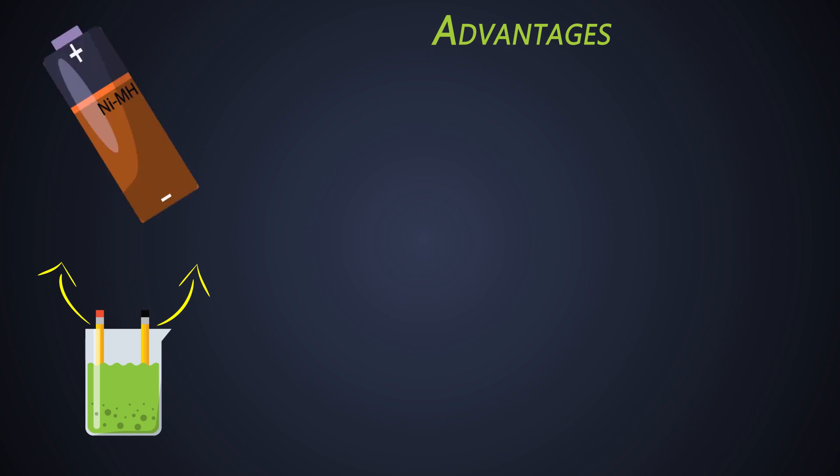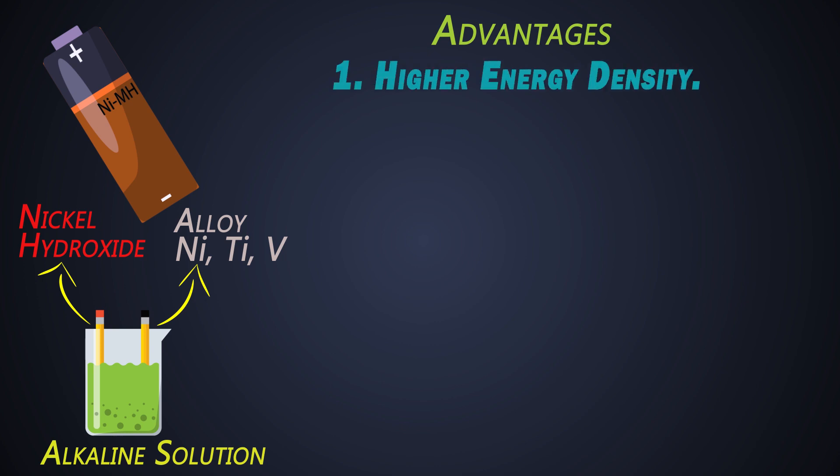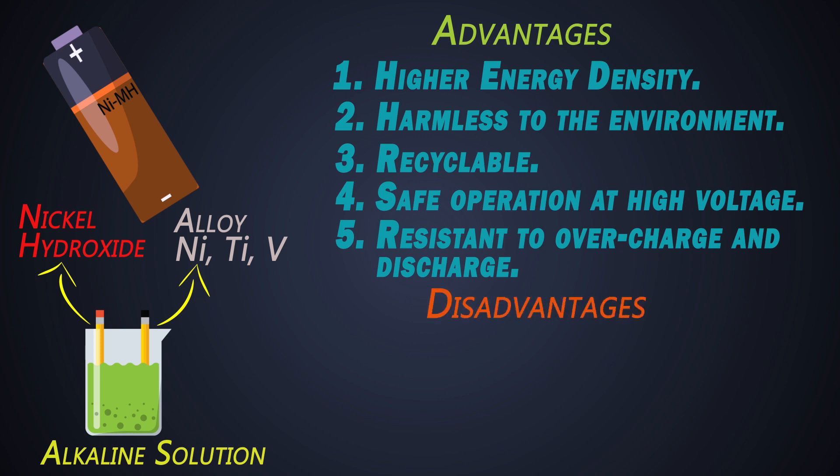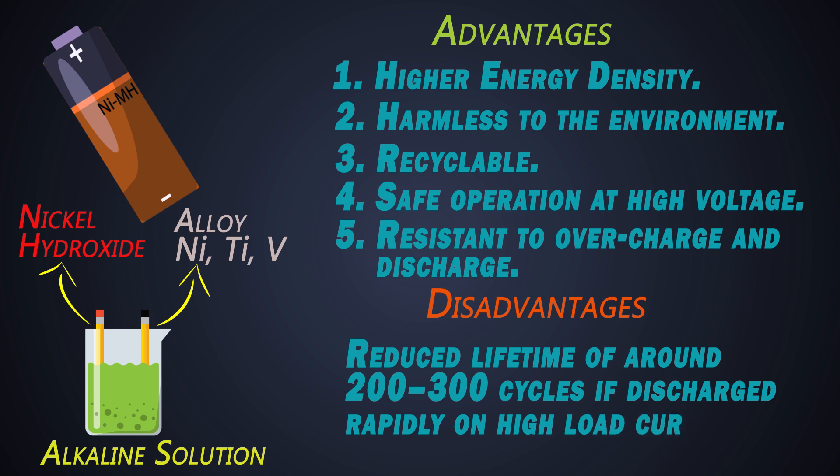Next battery is nickel metal hydride. Its positive electrode is made up of nickel hydroxide. Its negative electrode is made up of an alloy of nickel, titanium, vanadium and other metals. And electrolyte is alkaline solution. This battery has double energy density as compared to lead acid battery. It is harmless for the environment. It is recyclable. This battery can be used for higher voltages. This battery is also resistant to over charge and over discharge. But this battery has very less life time, around 200 to 300 cycles, if we discharge rapidly on high load currents.